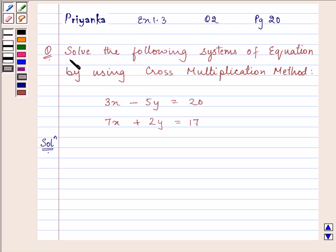The question says, solve the following systems of equation by using cross multiplication method. The equation given to us is 3x minus 5y equals 20 and 7x plus 2y equals 17.